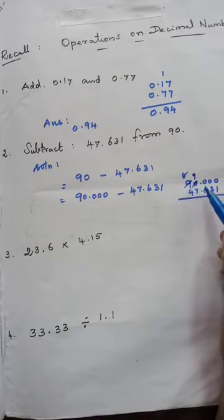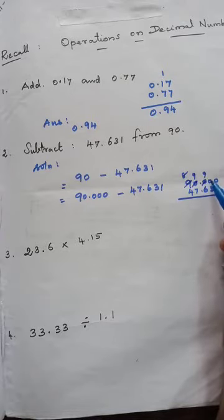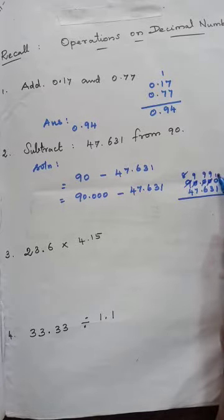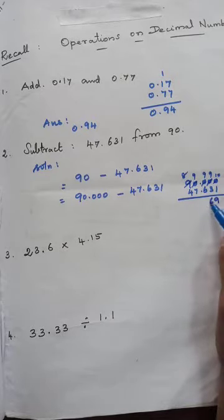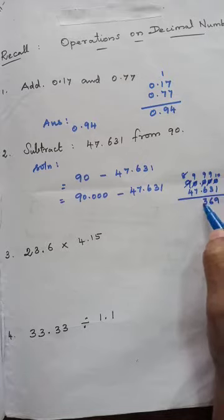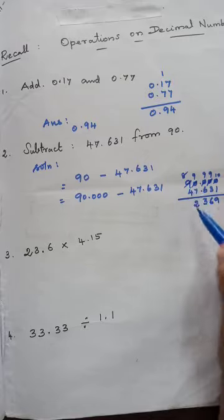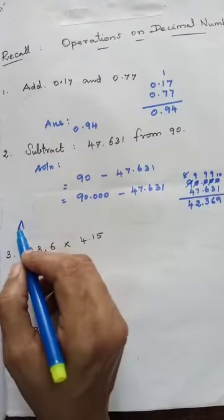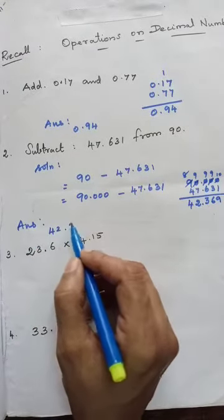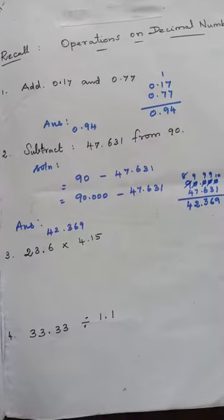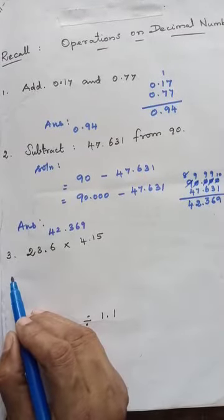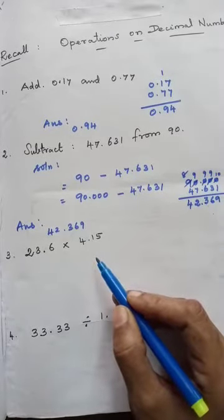After borrowing: it will come 8, then 10. From 10 you borrow, it comes 9, then 9, then 10. 10 minus 1 is 9, 9 minus 3 is 6, 9 minus 6 is 3, 9 minus 7 is 2, 8 minus 4 is 4. So the answer is 42.369.